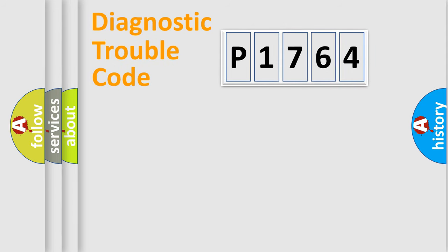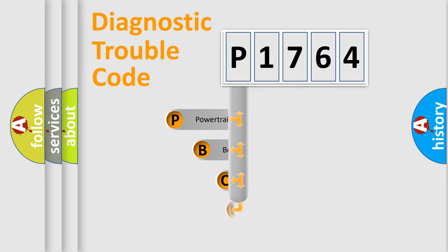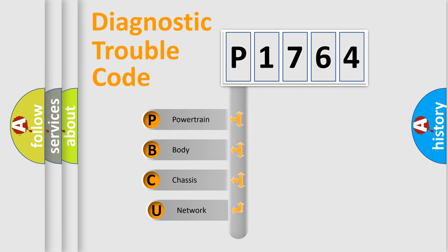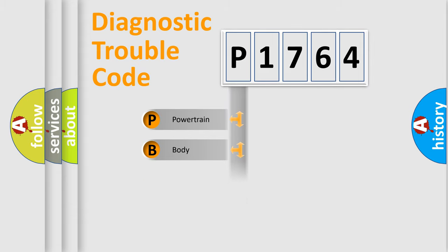Let's do this. First, let's look at the history of diagnostic fault code composition according to the OBD2 protocol, which is unified for all automakers since 2000. We divide the electric system of automobile into four basic units: Powertrain, Body, Chassis, and Network.